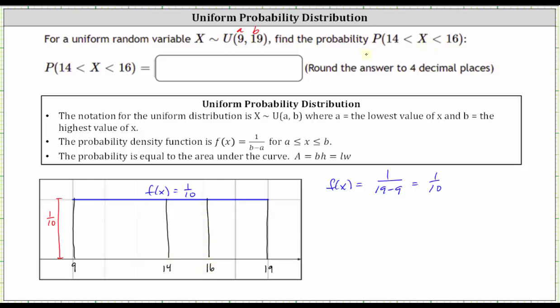The probability that X is greater than 14 and less than 16 is equal to the area under the probability density function from 14 to 16, this area here.